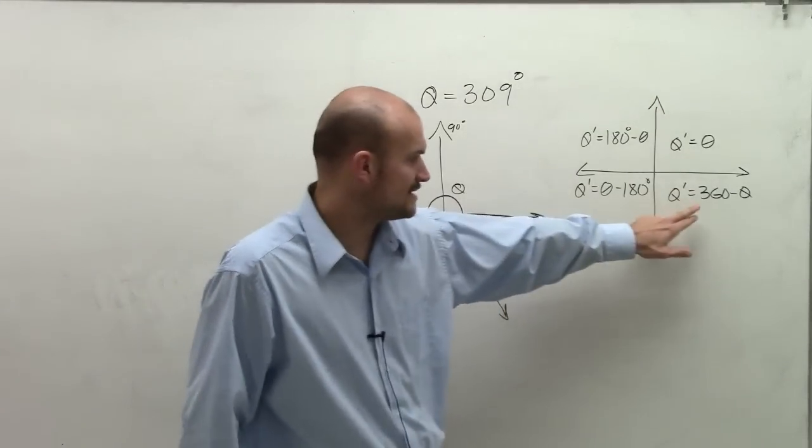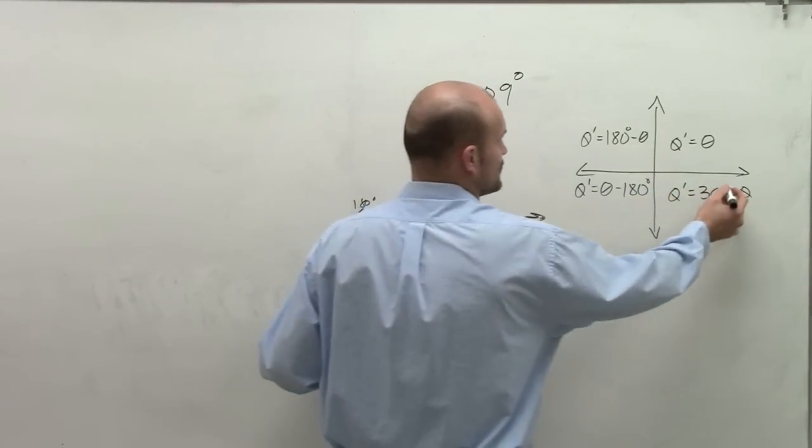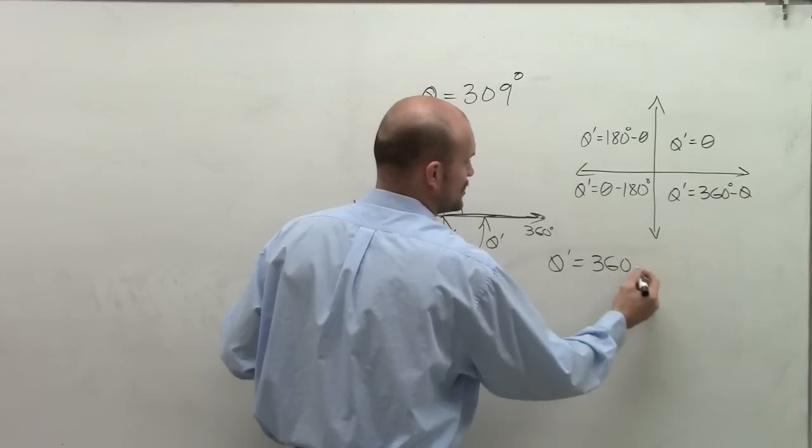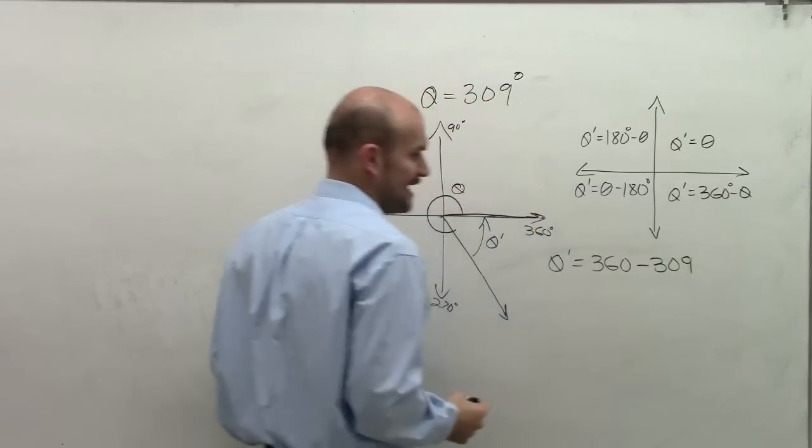So I look and I say, all right, well, that means I have an angle in the fourth quadrant. So to find theta prime, what I'm going to do is take 360 degrees and minus it from my theta, which is 309 degrees.